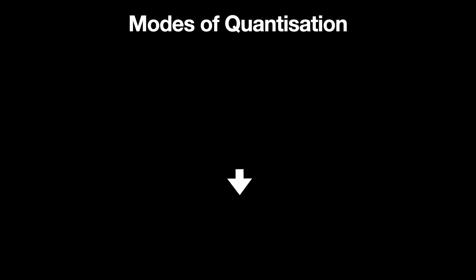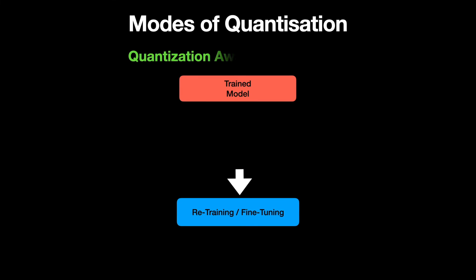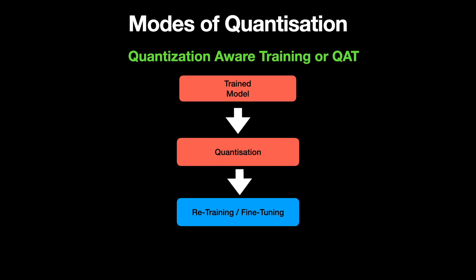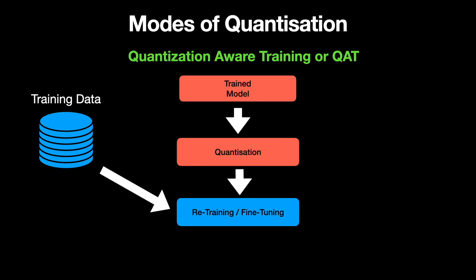In quantization-aware training, or QAT in short, we quantize the trained model using standard procedure but then do further fine-tuning or retraining using fresh training data in order to obtain the quantized model.